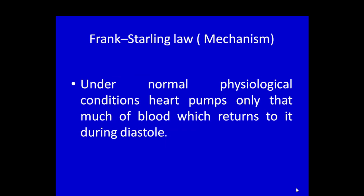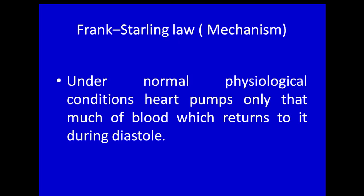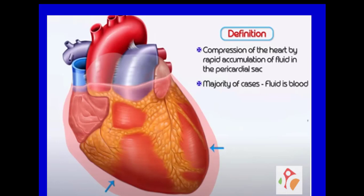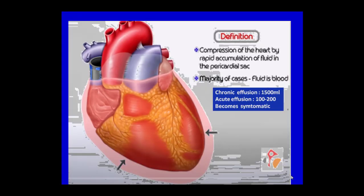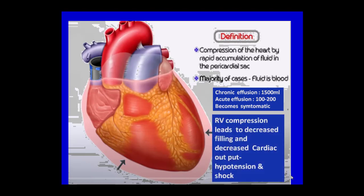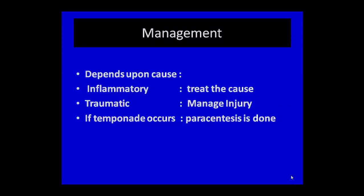Correlating this physiologically using Frank-Starling's law: under normal conditions, the heart pumps only as much blood as returns to it during diastole. Since the fluid in the pericardial cavity prevents the heart from receiving more blood during diastole, a smaller amount of blood is pumped during systole, leading to decreased blood pressure and cardiac output. Cardiac tamponade is a rapid accumulation of fluid in the pericardial cavity — usually blood after chest injury. Chronic effusion can reach 1500 ml, but acute accumulation of up to 200 ml becomes symptomatic, causing right ventricular compression, decreased filling, decreased cardiac output, hypotension, and shock.